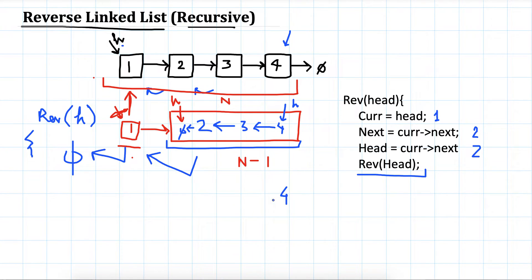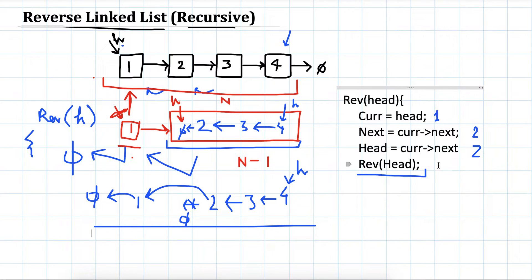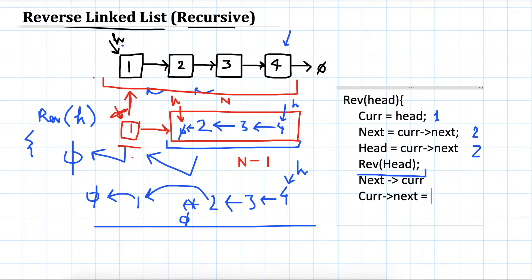This function has done this much: 4, 3, 2, and it's currently null, head is here. But we had saved 1 and 2, so we will make 2's next point to 1 and 1's next point to null. This is our reversed list. So we can write the remaining part: once it has reversed, we set next's next to current, that is 1, and current's next to null.